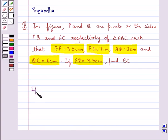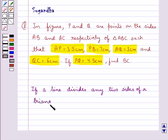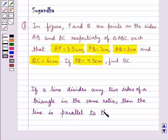We know that if a line divides any two sides of a triangle in the same ratio, then the line is parallel to the third side. This will be taken as the key idea for this question.